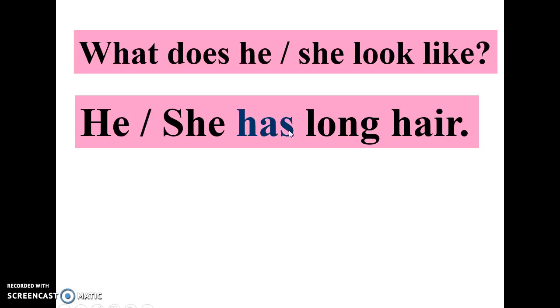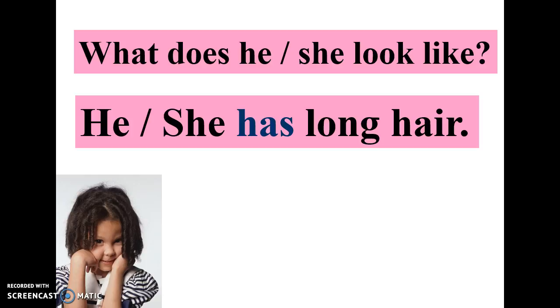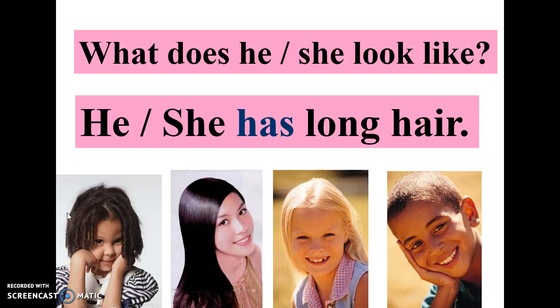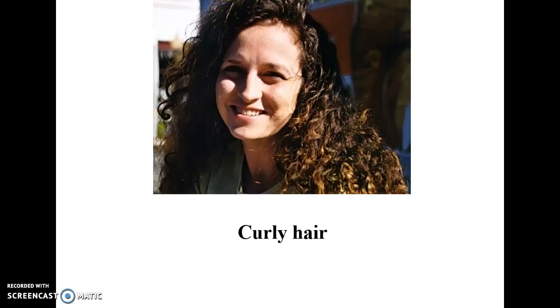What does he or she look like? We are going to use 'has' to describe the hair. He has, she has long hair. Look at these pictures: she has curly hair, she has straight hair, she has long hair, she has short hair. Curly is the shape of the hair. Long, curly, brown hair - as you can see, we use the correct order of the adjectives.